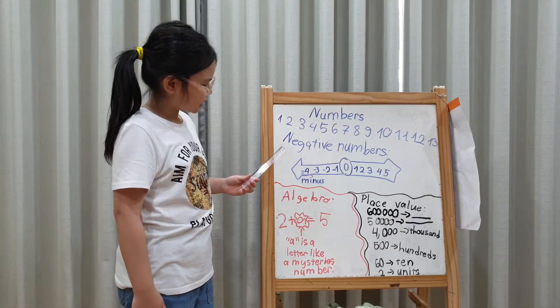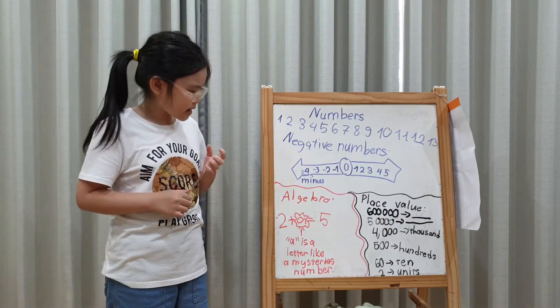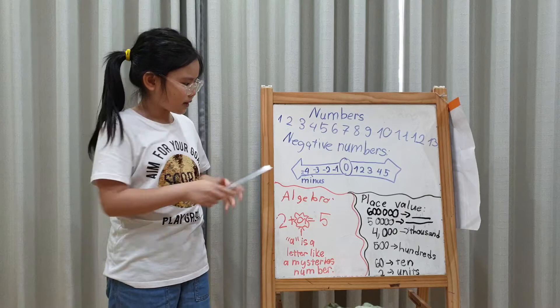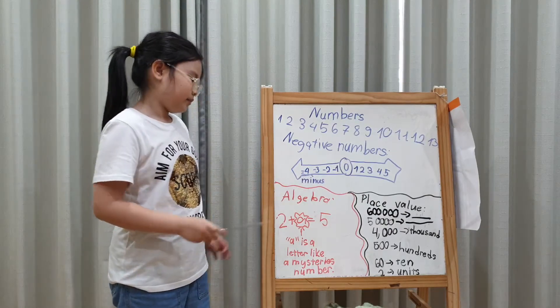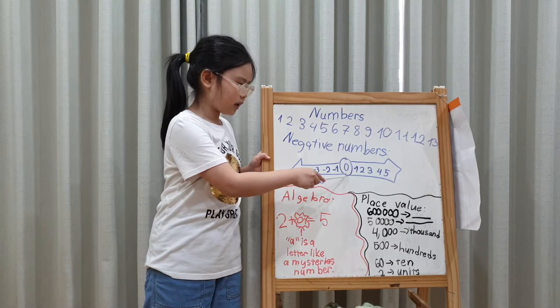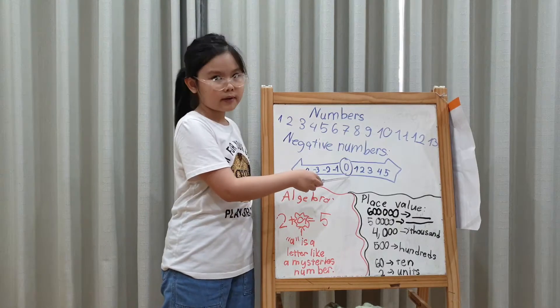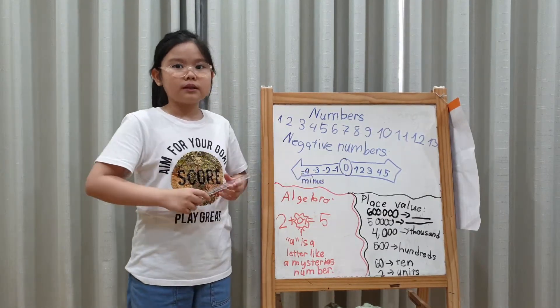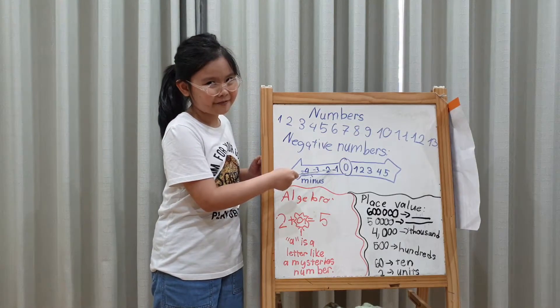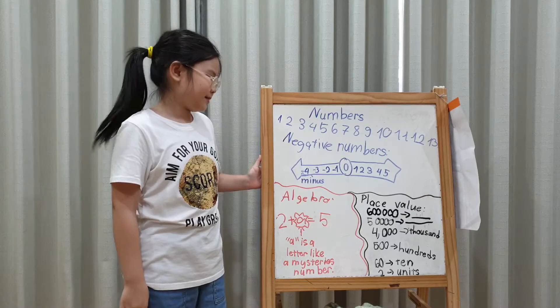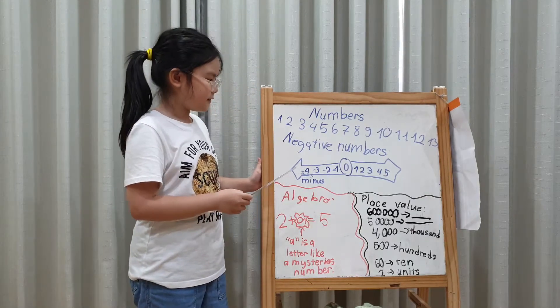Okay, let's learn negative numbers. Do you know what is negative numbers? These are negative numbers. It's under the word zero because this is smaller than zero. Because it has a minus sign in front of it. So, we called it negative numbers.